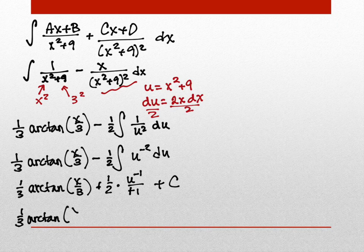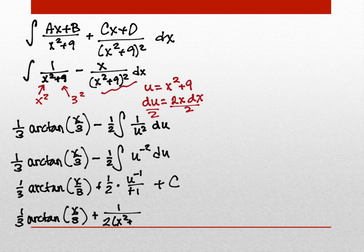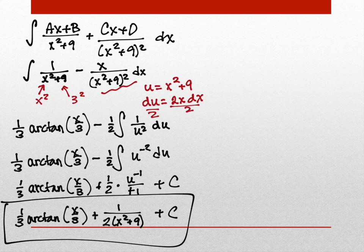So the final answer combines both pieces: (1/3) arctan(x/3) + 1/(2(x² + 9)) + C, and they can't be simplified further. You really cannot tell just by looking at a problem how hard it's going to be — some that look messy end up simple, and some that look simple end up messy.